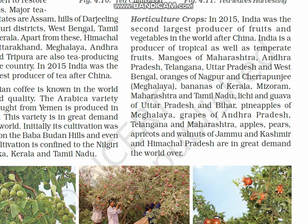Now let's look at horticulture crops, relating to fruits and vegetables. India holds the second position in horticulture — it is the second largest producer of fruits and vegetables in the world after China. India can produce both tropical and temperate fruits since it lies in tropical and subtropical regions.